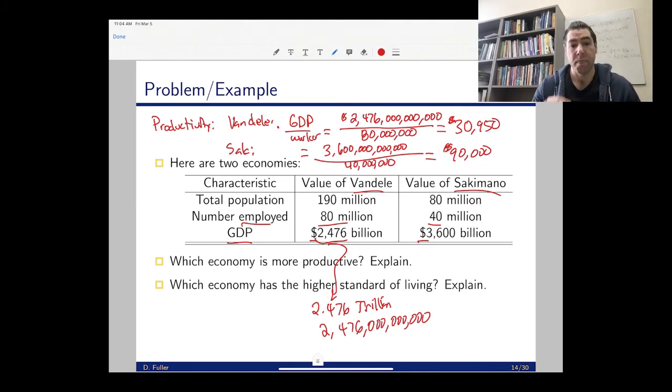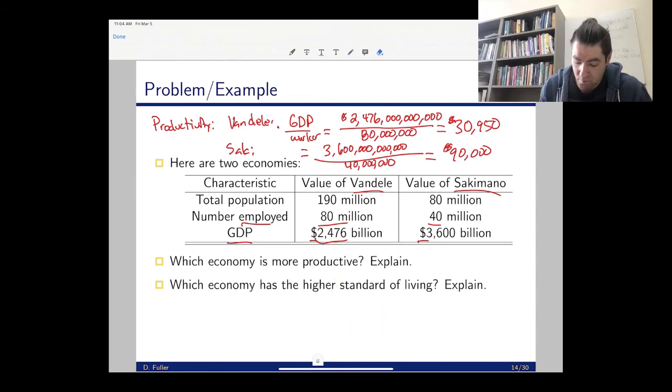To answer which economy is more productive, I need to consider their GDP per worker. Now, which economy has the higher standard of living? We will use GDP per person, where it's the entire population. Remember, the entire population doesn't necessarily work - we have retirees, we have households that have only one person in the labor market, you have students, kids, and all this good stuff. When I think of standard of living, I want to take that total output produced per person.